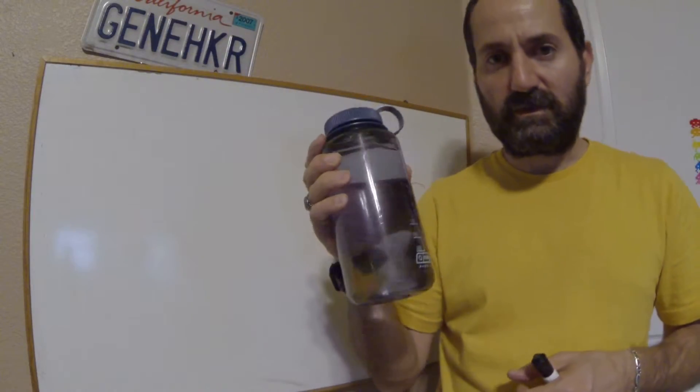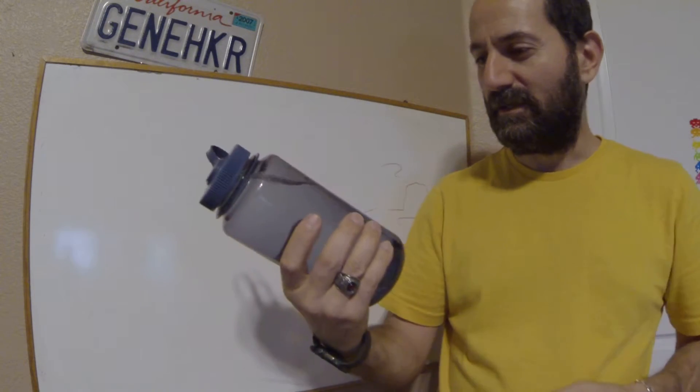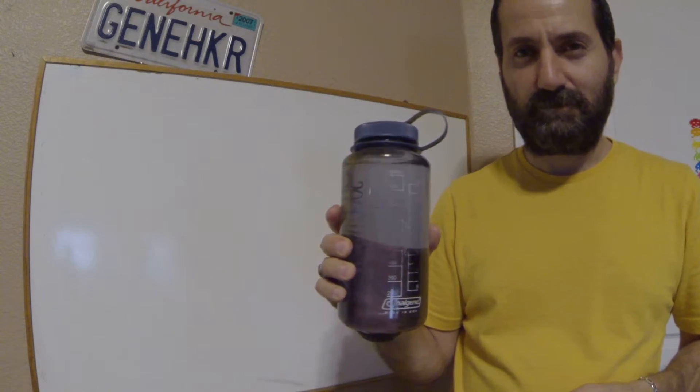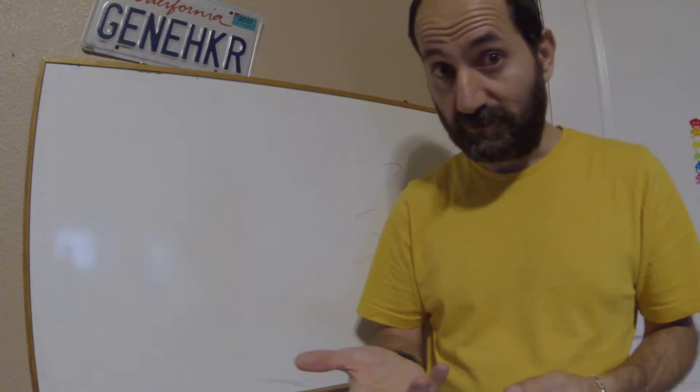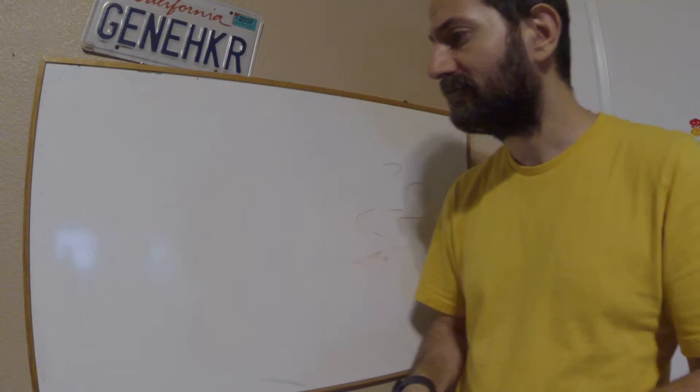Hey guys, today I'm going to explain how pH works. Have you ever wondered what pH means? We all know that water has a pH of 7, bleach is basic, and citrus like limes and lemons are acidic — but what does pH actually mean? Obviously it's important; if something is an acid you don't want to get into contact with it. So let's explain what pH means in a very clear and concise way.